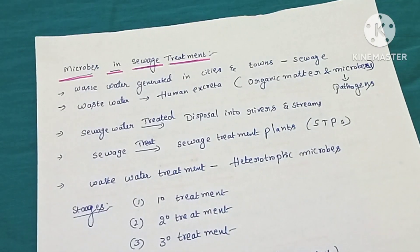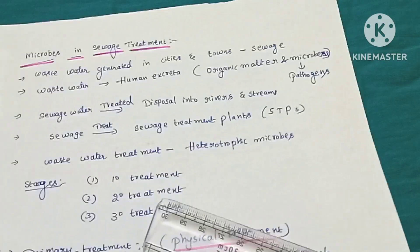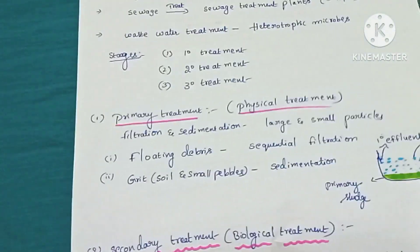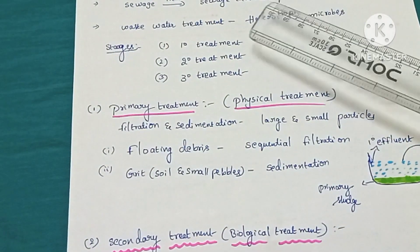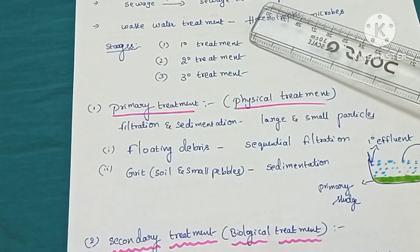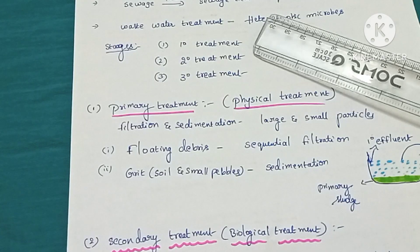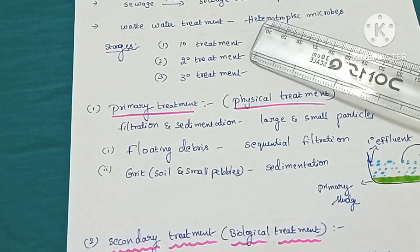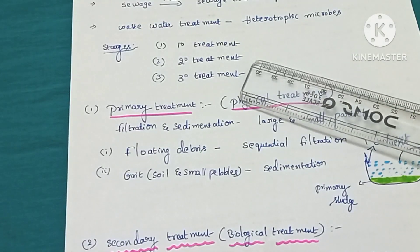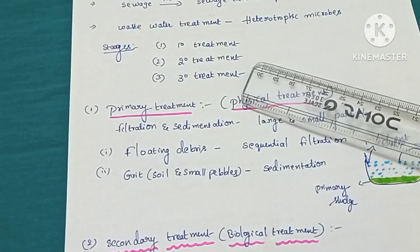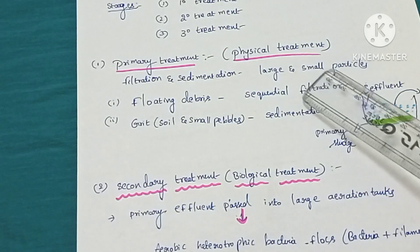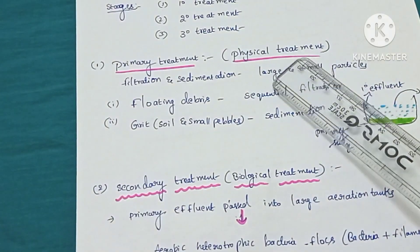There are three stages present in sewage treatment: primary treatment, secondary treatment, and tertiary treatment. Primary treatment is physical treatment. Secondary treatment is biological treatment — microorganisms are involved here and it is very important. The third stage, tertiary treatment, is a physical and chemical treatment.